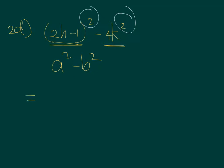Again, since it follows the form, then you will have two binomial factors. First coming from 2H minus 1 squared, which is just 2H minus 1, and the second coming from the 4K squared. The square root of 4K squared is 2K.